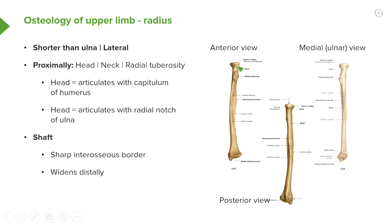The head of the radius articulates with the capitulum of the humerus, and also with the radial notch of the ulna. We can see the head on this posterior view and on the medial or ulnar view of the radius. The shaft has a sharp interosseous border, just like the ulna, allowing the interosseous membrane to articulate, and the shaft widens quite distally as it passes towards the elbow joint.